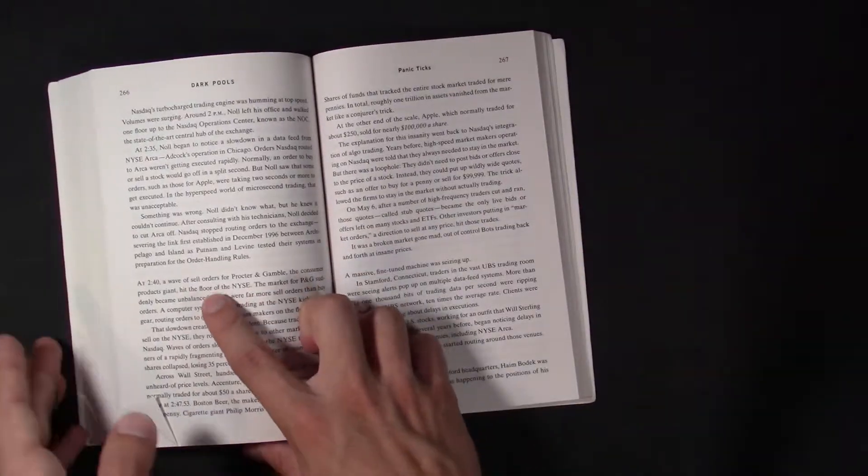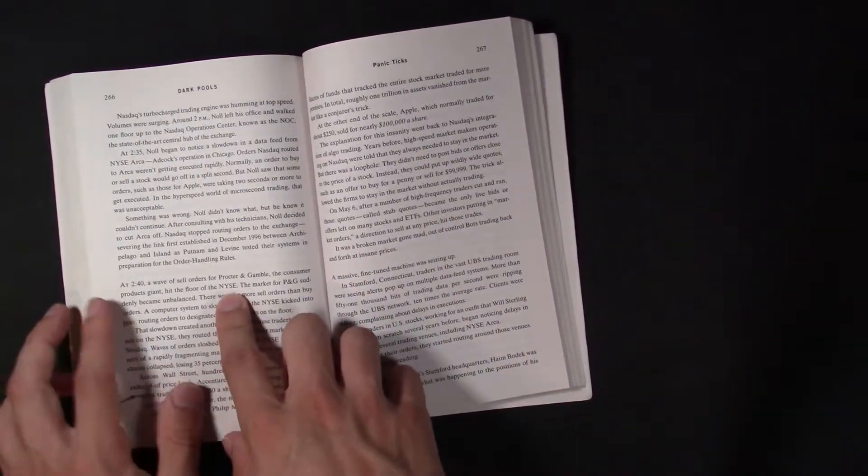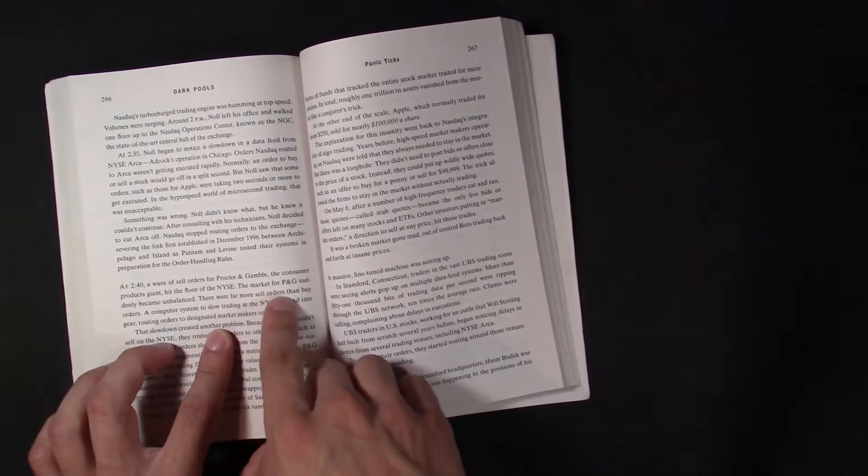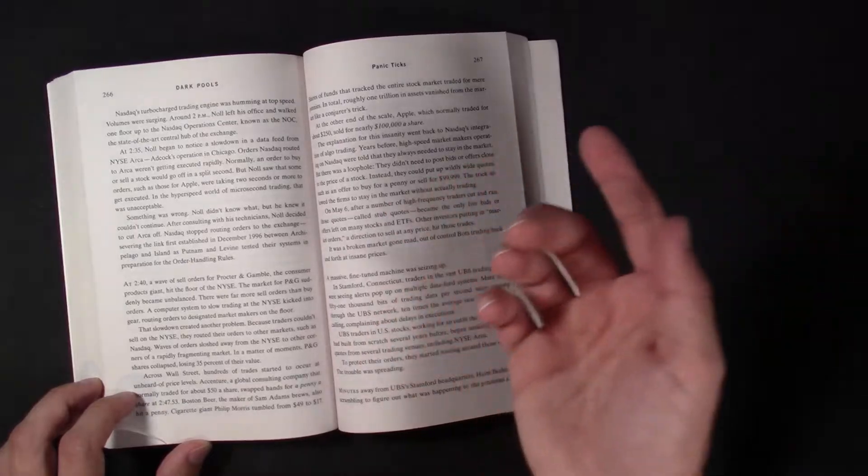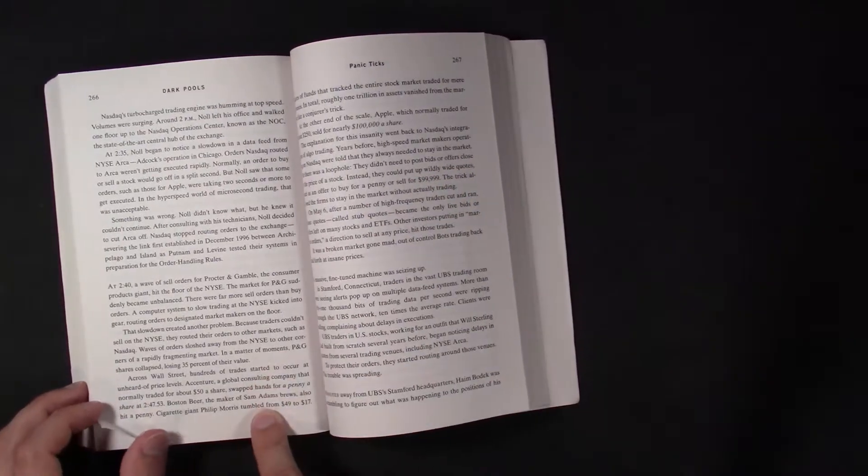Right here. At 2:40, a wave of sell orders came at Procter & Gamble. It fell, in a matter of moments, it fell 35% in just maybe a minute or so. I don't know. Again, another example.